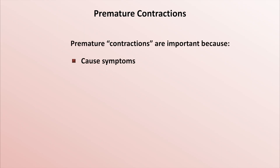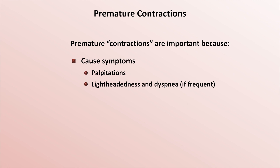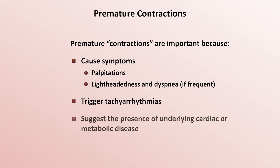Why do we care about premature contractions? They're important because they can cause symptoms in and of themselves. The most common symptom is palpitations, but if they are frequent they can lead to lightheadedness and dyspnea. And if their frequency exceeds 10% of all depolarizations, patients can develop a cardiomyopathy or heart failure. Premature contractions can also trigger tachyarrhythmias, particularly those due to the mechanism of reentry. Their presence can also be evidence of underlying cardiac or metabolic disease, and they can actually help identify tachyarrhythmias — I'll show an example of that at the end of the video.